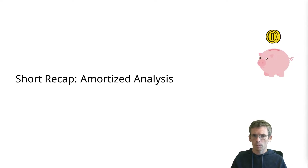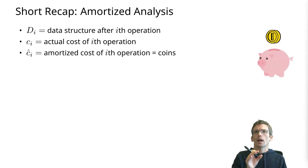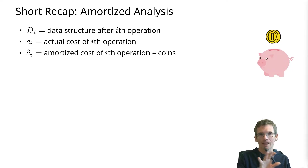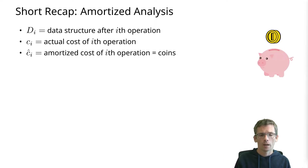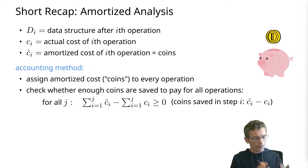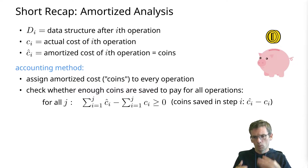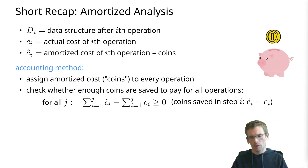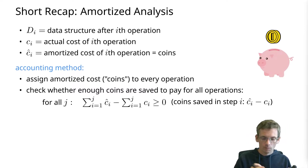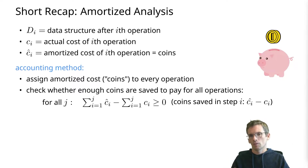Amortized analysis. So we have a sequence of operations on a data structure. We look at the data structure D_i after i operations, and we have the cost of the i-th operation and the amortized cost of the i-th operation. In the accounting method we define for each operation an amortized cost — we use coins to express this as a number. We then check whether those coins, meaning the amortized costs we defined, are sufficient to cover the actual costs in terms of the sum. The sum of amortized costs up to operation j should cover the sum of actual costs.